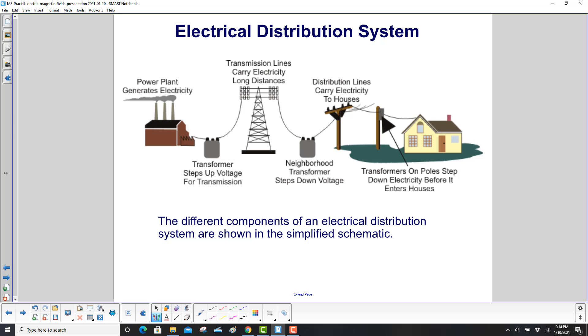The different components of an electrical distribution system are shown here. Here's our power plant generating electricity. The first transformers step up the voltage for transmission. The transmission lines carry the electricity over long distances.